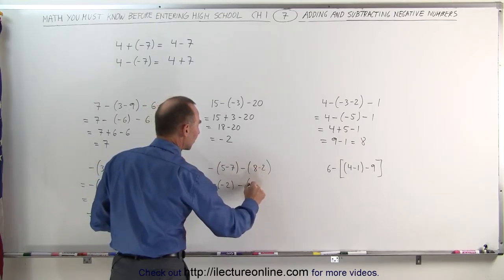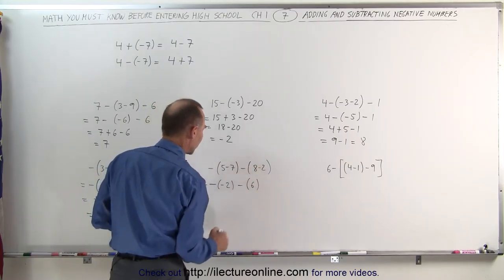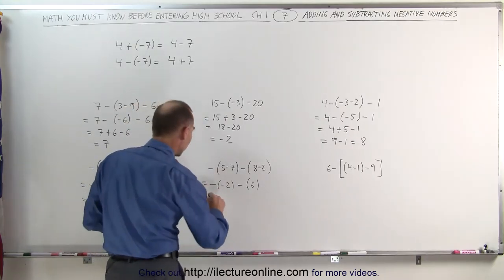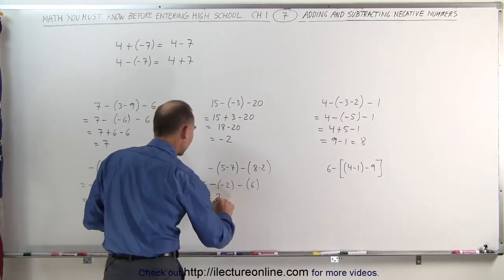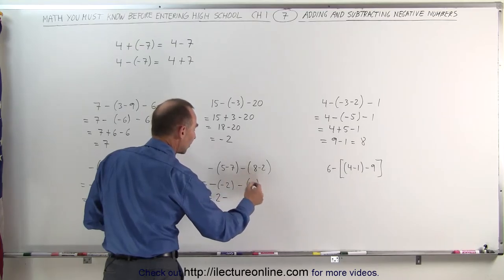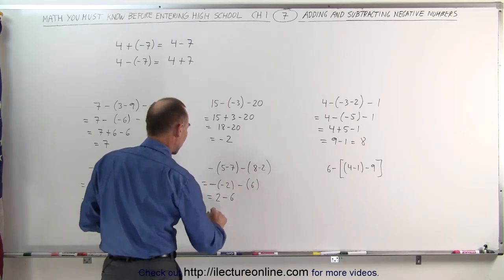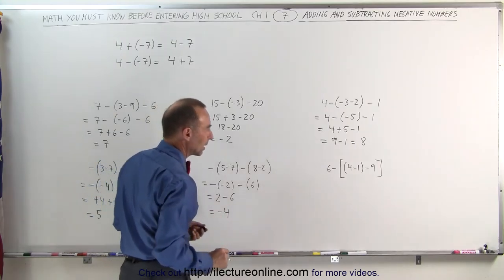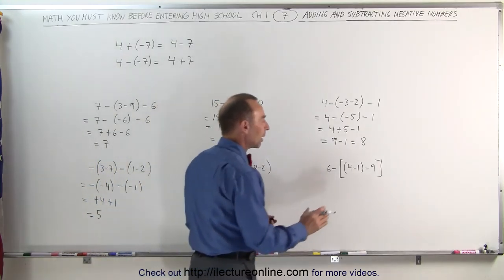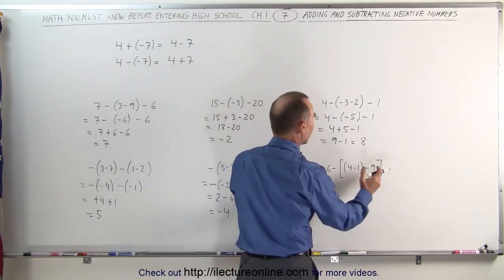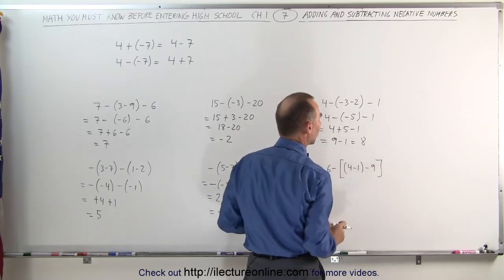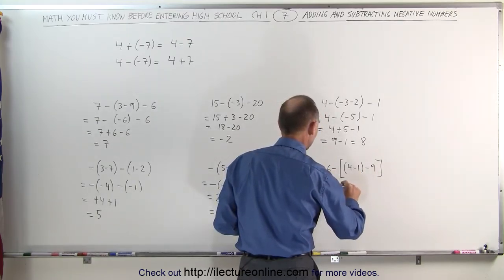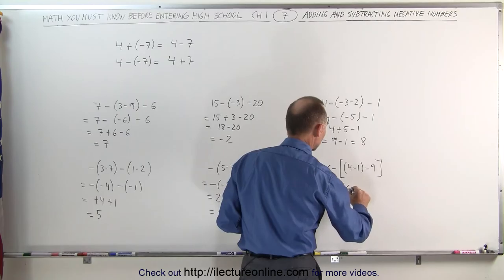Our next example — same thing again. 5 minus 7: we subtract 7 from 5, we get a negative 2. So minus a negative 2, minus 8 minus 2 is a positive 6. Subtracting a negative number is the same as adding its opposite. This becomes a positive 2, minus a positive 6 becomes 2 minus 6, and 2 minus 6 is equal to minus 4.